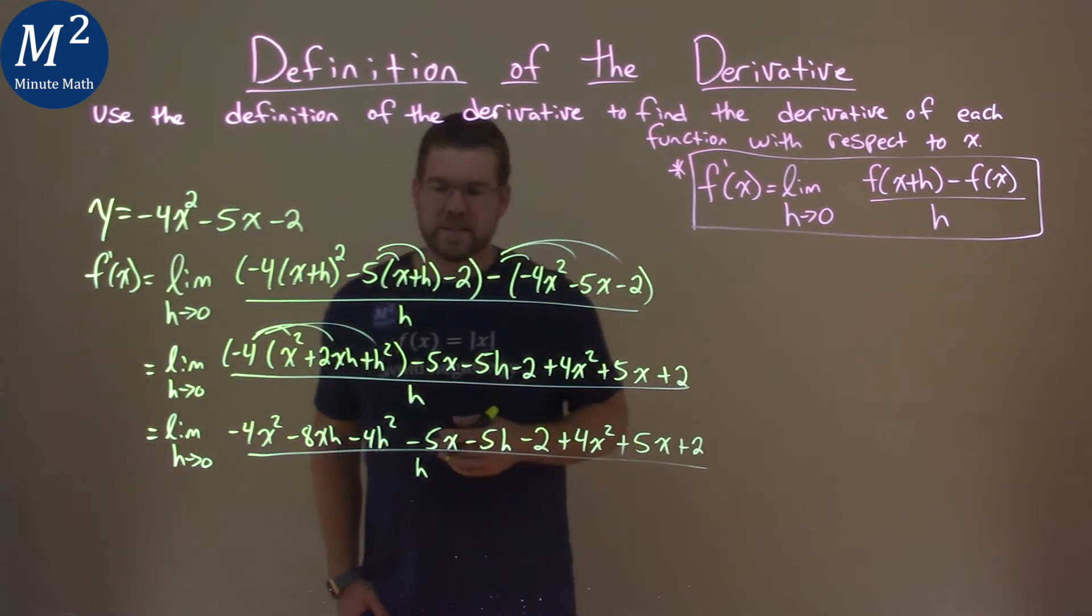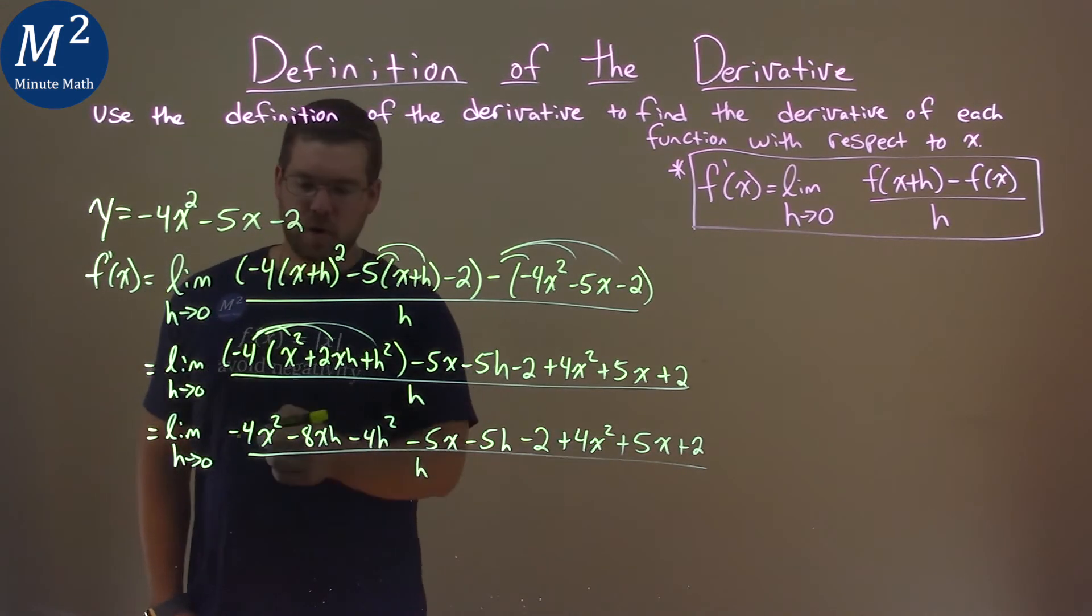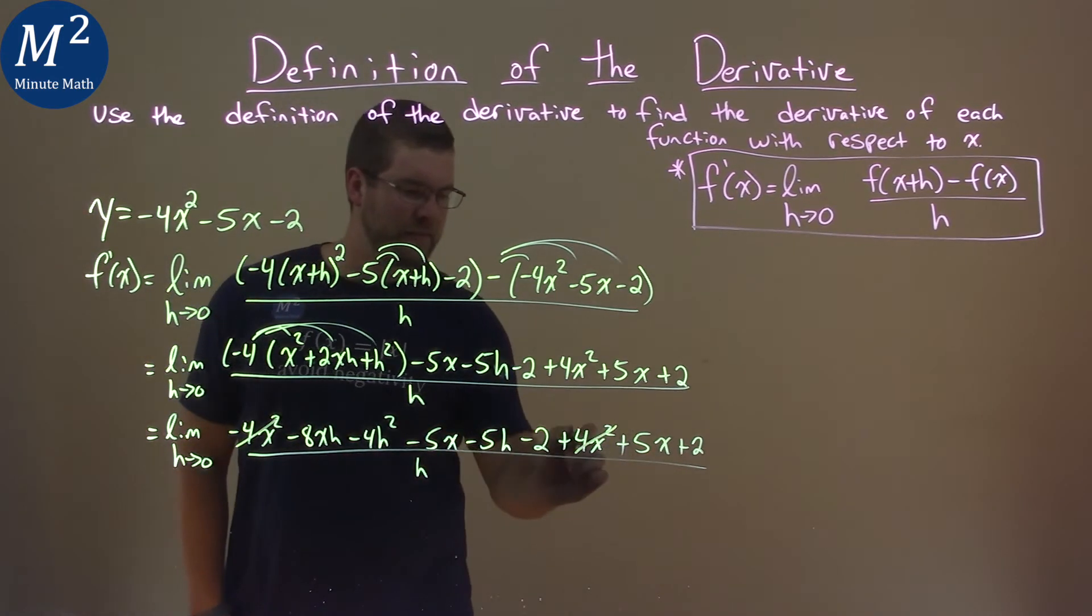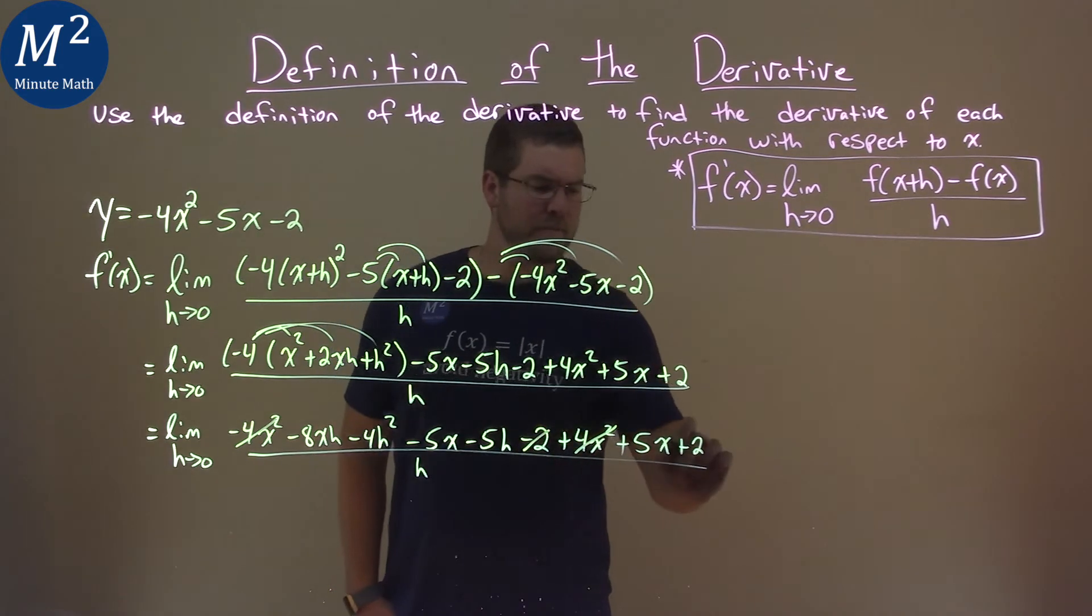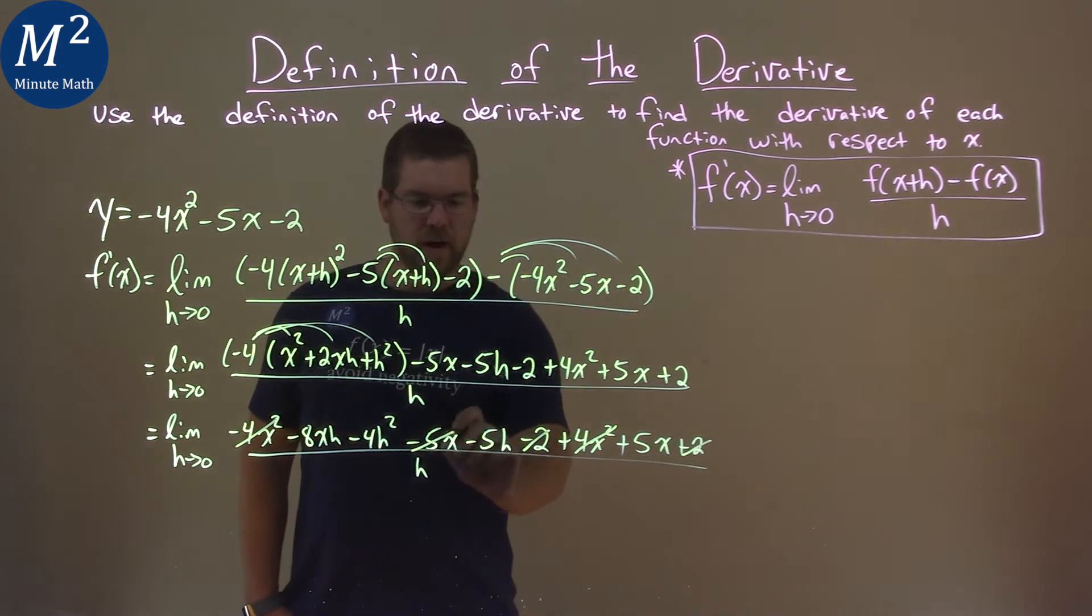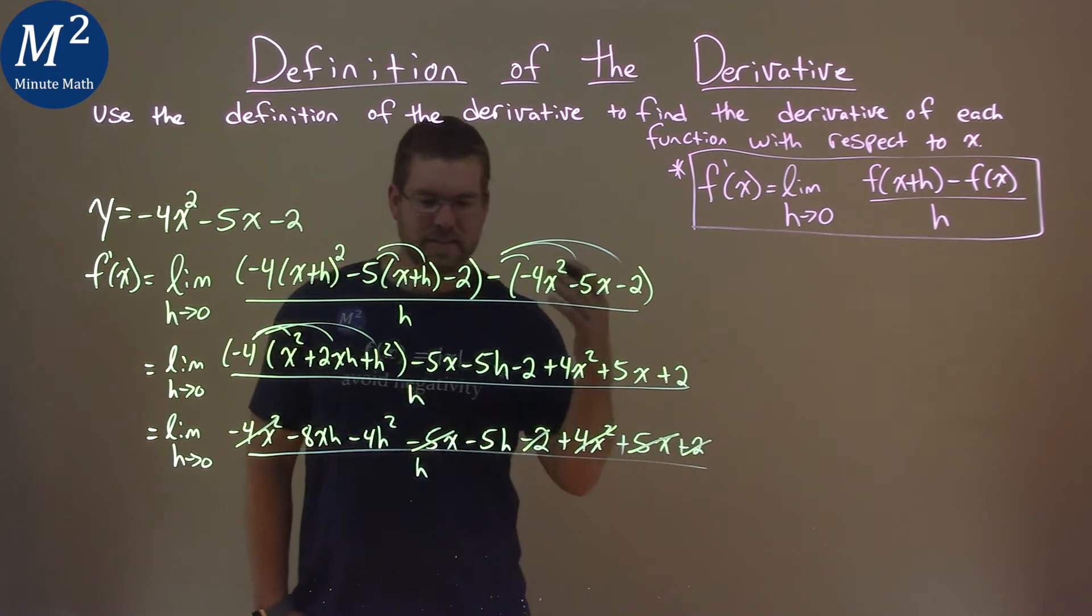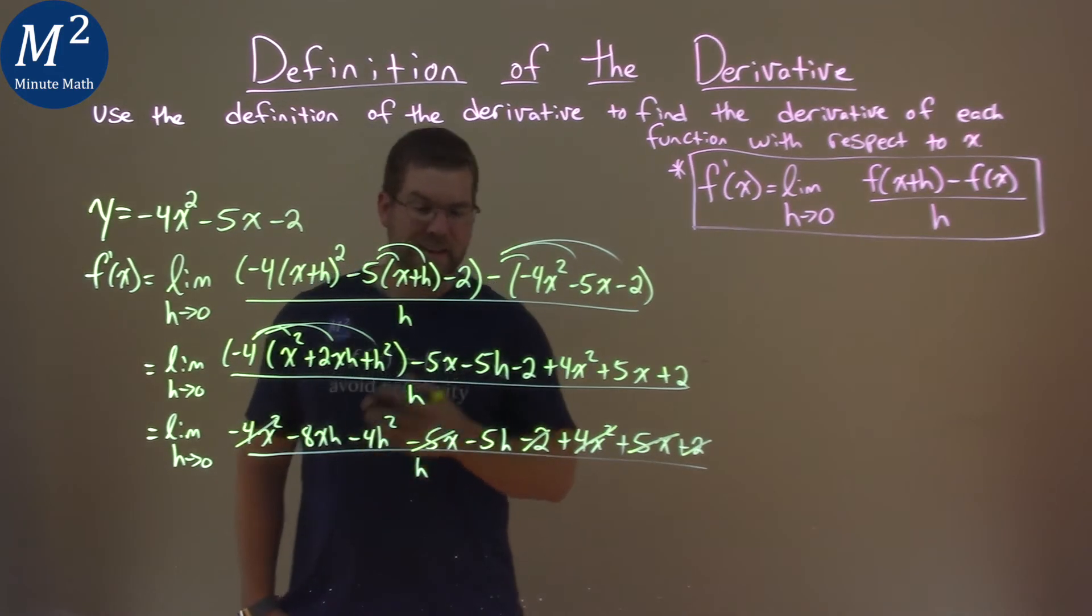All right. Best part of the whole thing here is cancel what we can. 4x squared, negative 4x squared, they cancel. Negative 2 and positive 2 cancel. Negative 5x and 5x cancel. And that's it in the numerator.